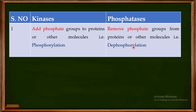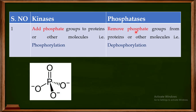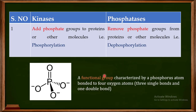This phenomenon of removal of a phosphate group from proteins or molecules is known as dephosphorylation. Now, what is a phosphate group? The phosphate group is a functional group characterized by a phosphorus atom bonded to four oxygen atoms. Three of the bonds are single bonds and there is one double bond with oxygen. Kinases add this phosphate group; phosphatases remove it.